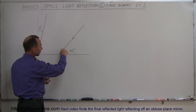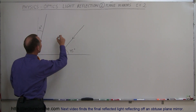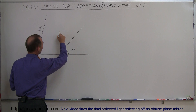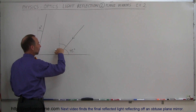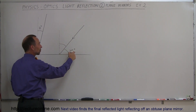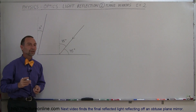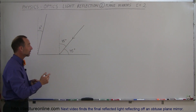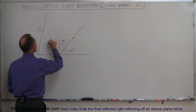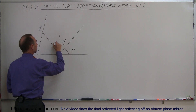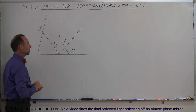We have an incoming beam. It makes an angle of 45 degrees with the horizontal, but that's not the important angle. We want to know the angle relative to the normal of the mirror, because that angle is the angle of incidence. Since this is a 90 degree angle, we subtract 45 from that, which means the angle of incidence is 45 degrees — which must be the same as the reflecting angle. So the beam leaving this point will have an angle of 45 degrees relative to the normal of that mirror.